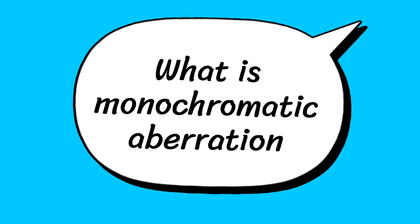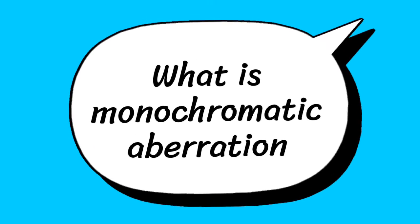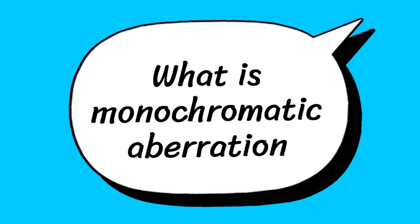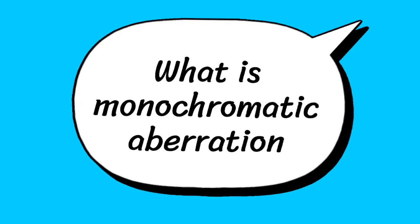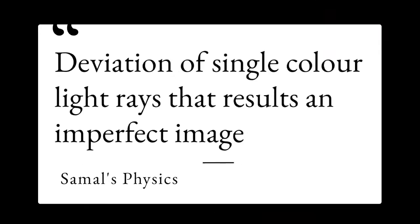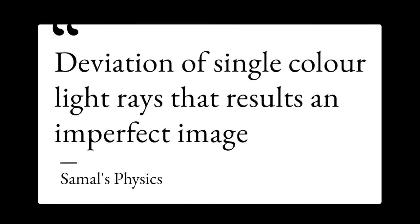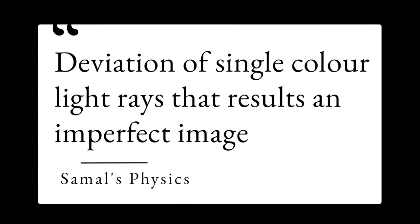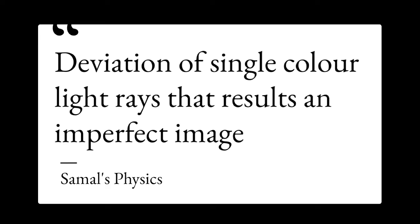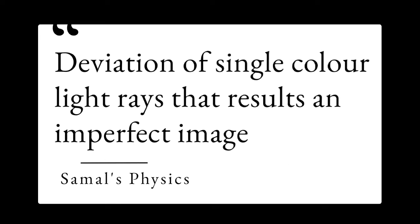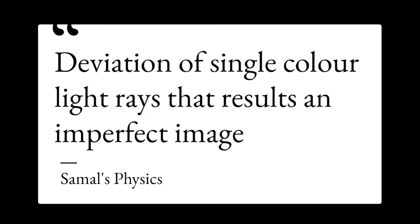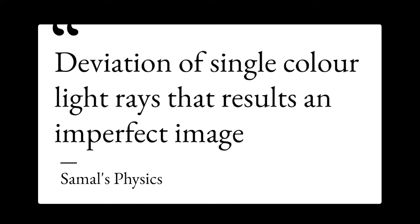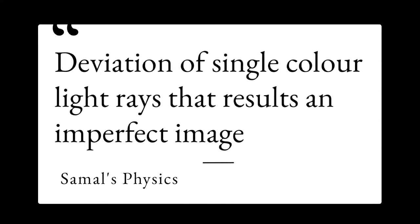What is monochromatic? Mono means single, chroma means color. Monochromatic aberration means the deviation of single color light rays that results in an imperfect image. Here the image is not perfect and we use a single color of light.